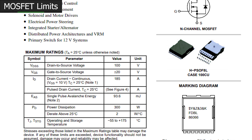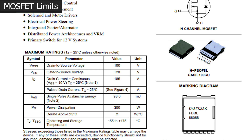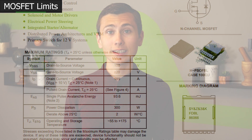Likewise, the drain-to-source voltage rating tells us how much voltage a transistor can hold back before something gives out internally, opening the floodgates, so to speak. Exceeding the drain-to-source voltage rating also tends to make a MOSFET fail short, or be stuck on.